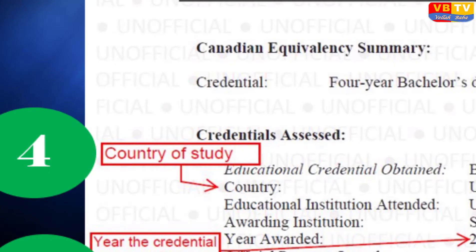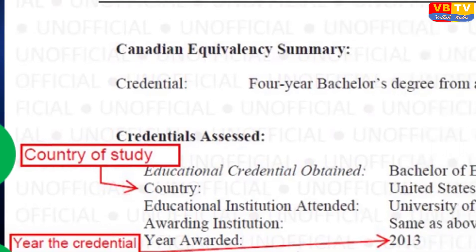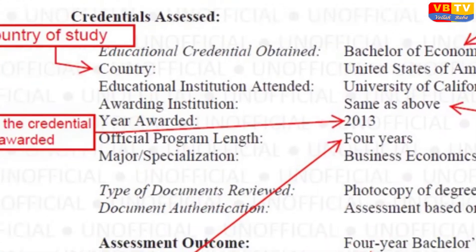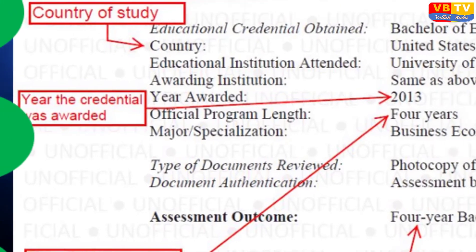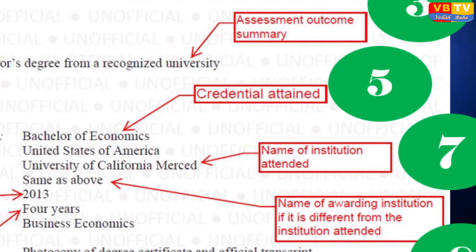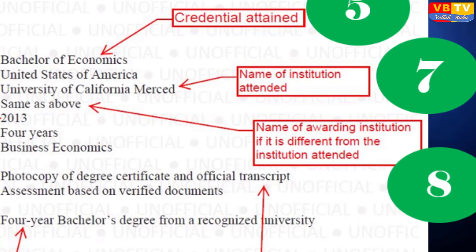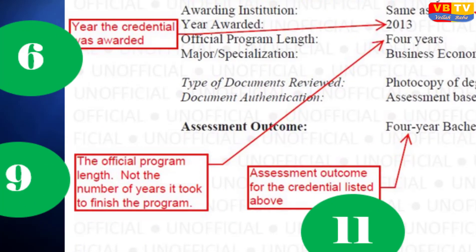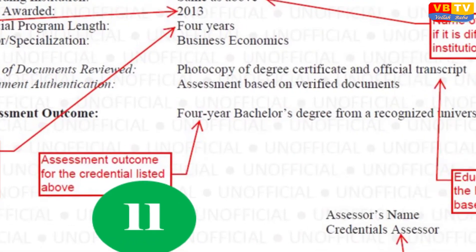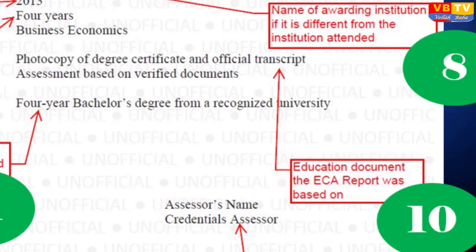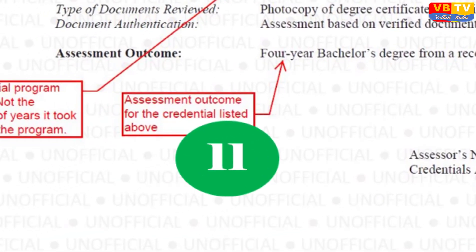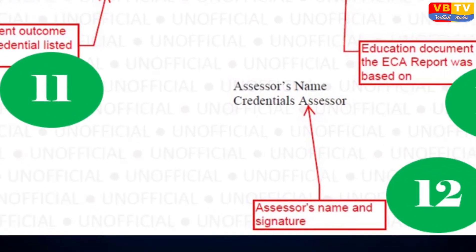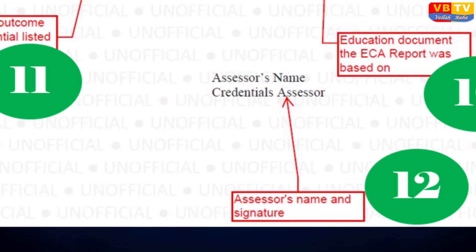This part shows the credential assessed: your country of study, your credential attained, and the year the credential was awarded. This shows the name of the institution attended, and the name of the awarding institution if different from the institution attended. It shows the official program length — not the number of years you took to pass the degree. This section lists the education documents that were submitted for the Educational Credential Assessment, and shows the assessment outcome or final result. Finally, this is the ECA Assessor Name and Signature.